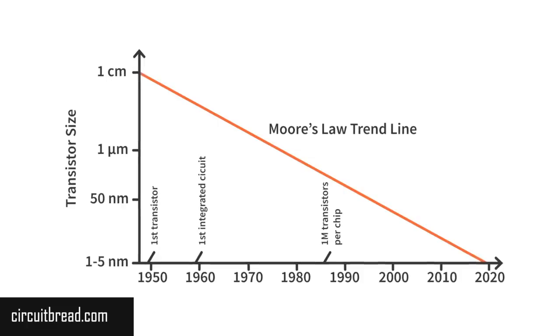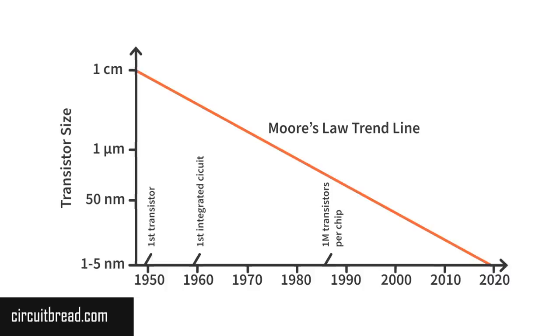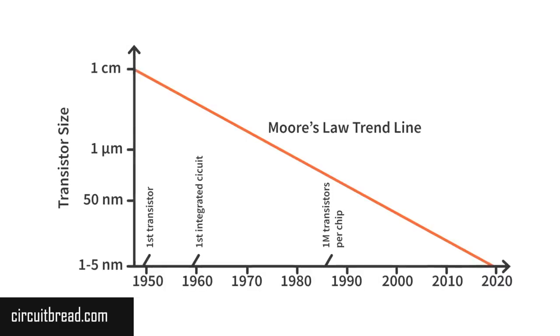Unlike baristas though, the size of transistors has shrunk dramatically since they entered the consumer market. The first transistors in the 1950s had a size of a few centimeters. Today, they're a few nanometers. That's about 10 million times smaller. If you shrunk a barista that much, they'd end up being about the size of a virus.